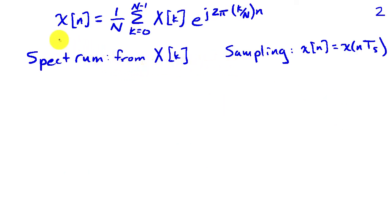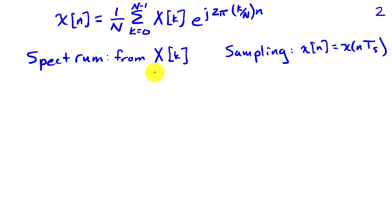Recall that the DFT represents a time signal x of n as a weighted sum of complex sinusoids whose frequencies are harmonic, or integer multiples of 1 over N. The weights are the DFT coefficients x of k. We're going to derive the spectrum from x of k. And of course sampling will be involved if we use a continuous time signal, so we also have to factor in the impact of the sampling interval t-sub-s.